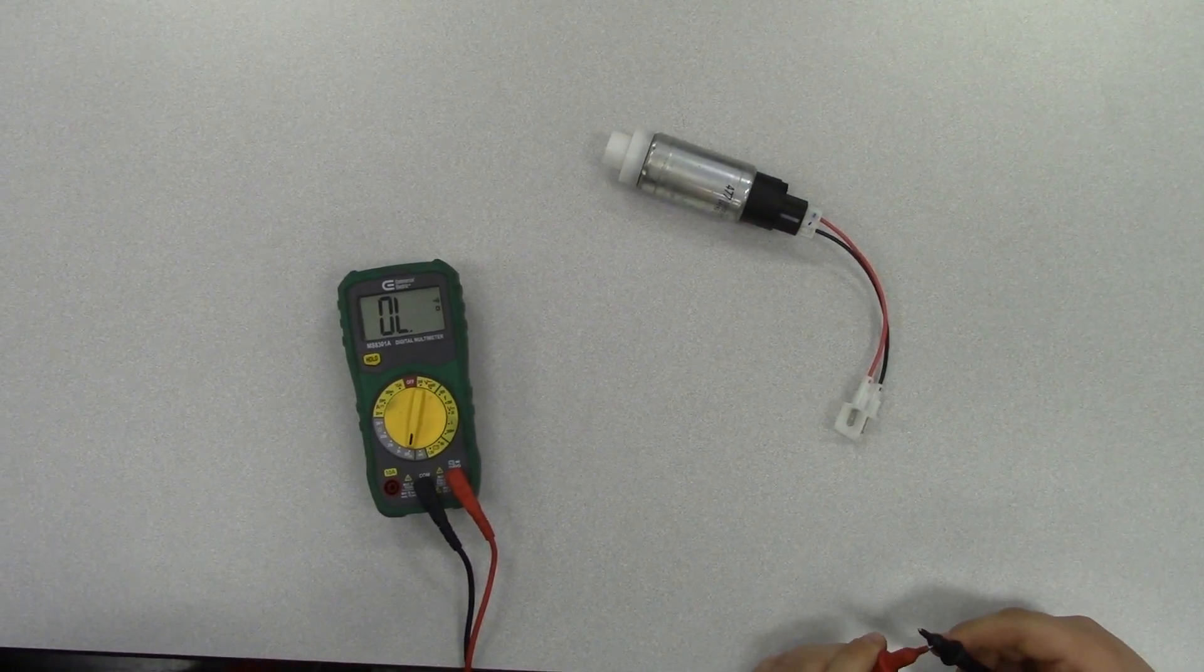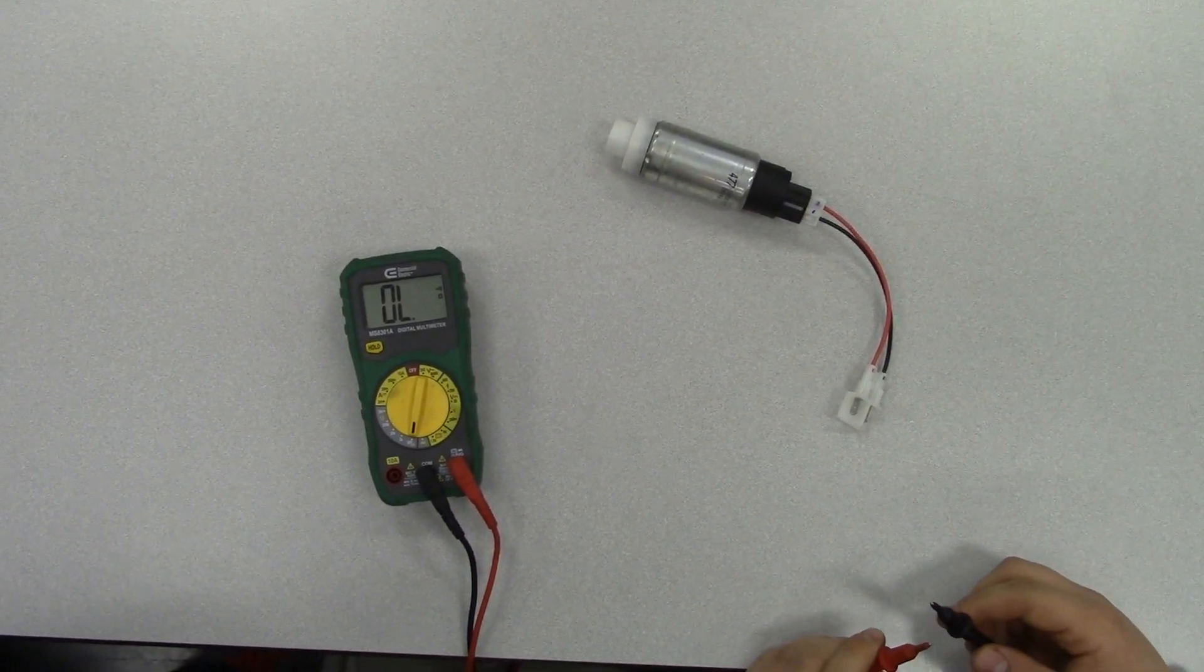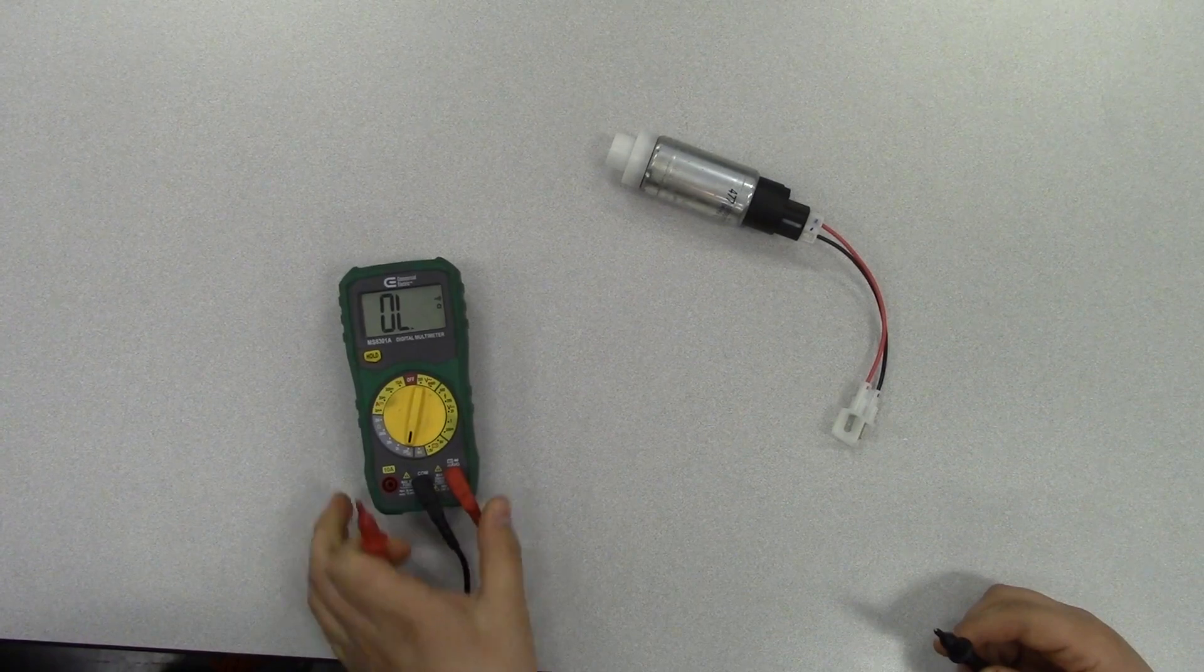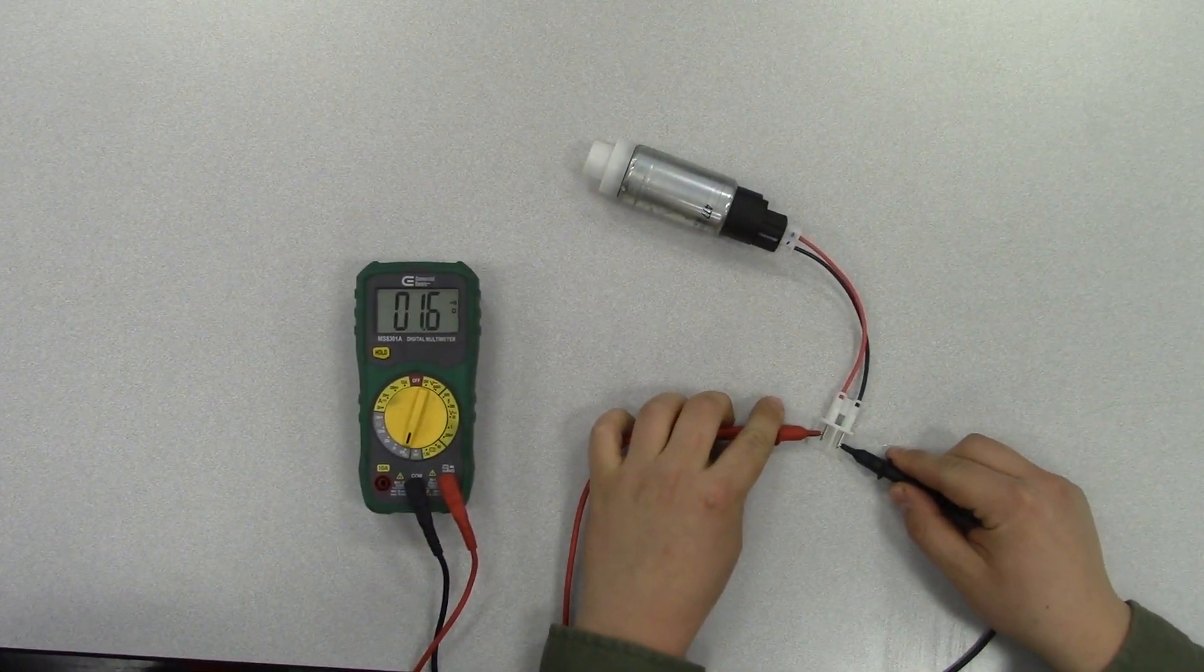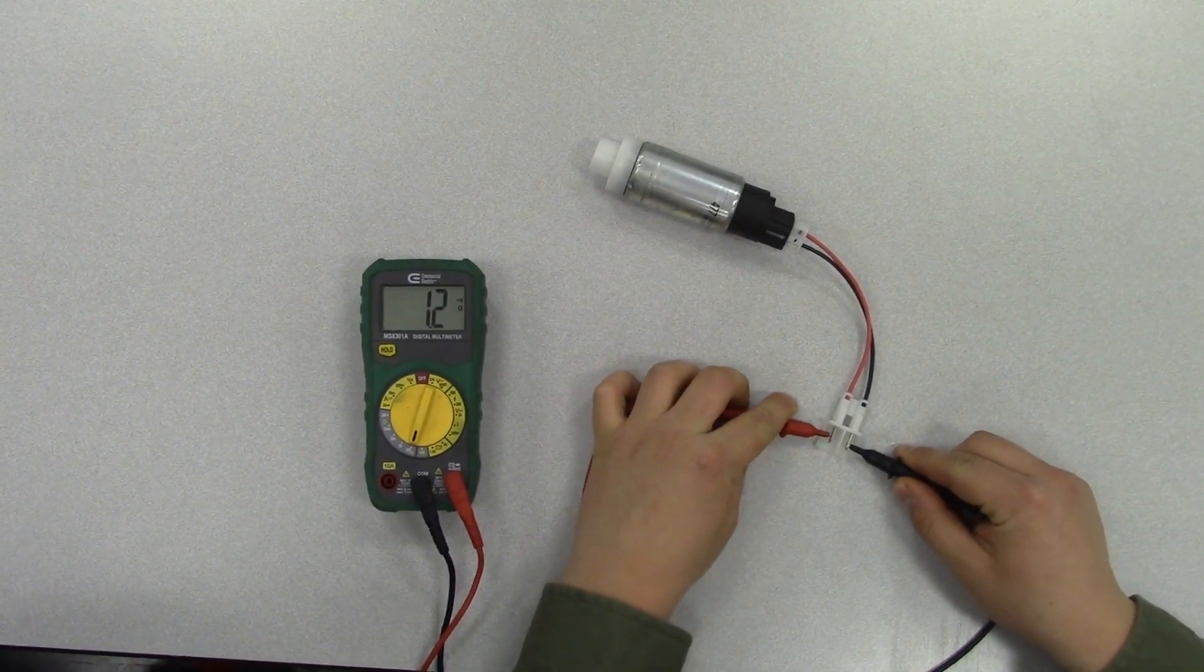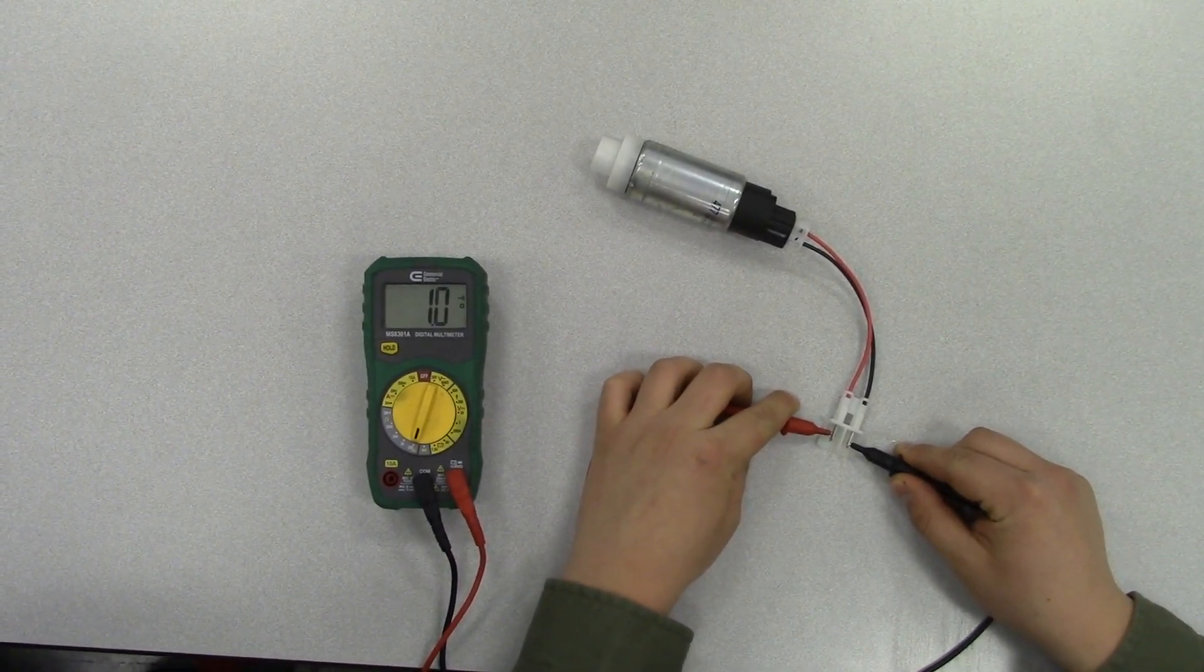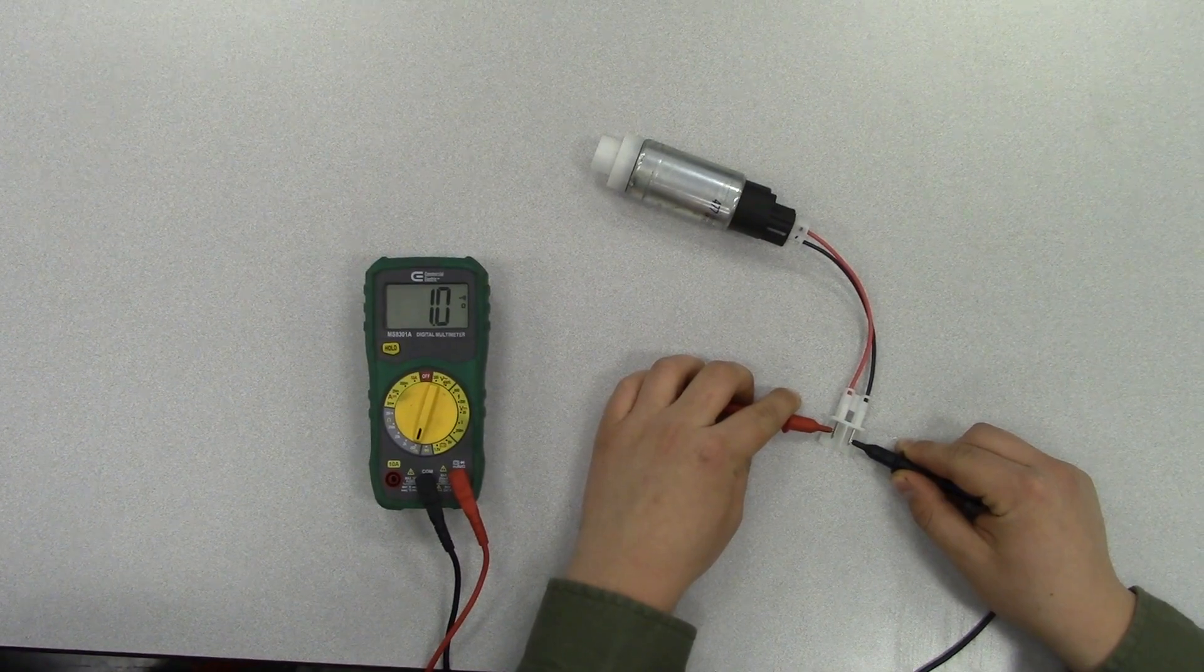This is a demonstration of testing the resistance of the motor. Set your meter to ohms on the lowest setting. In this case the spec is one ohm and it is around the dot.